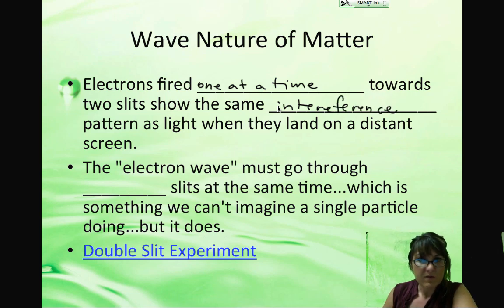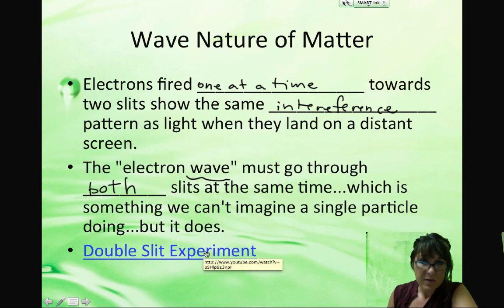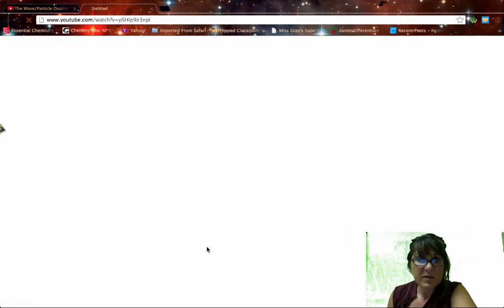So when we fire them at the slits, we expect to see just a dot on the wall behind there. What happens is we see a wave. So the electron wave has to go through actually both of the slits at the same time. We can't imagine a single particle actually doing this, but it does. Let me show you.